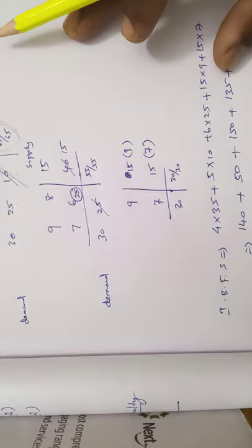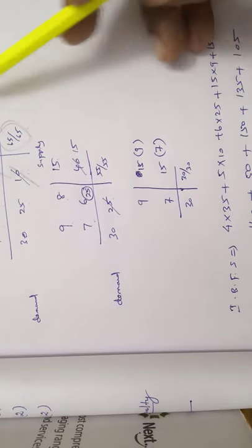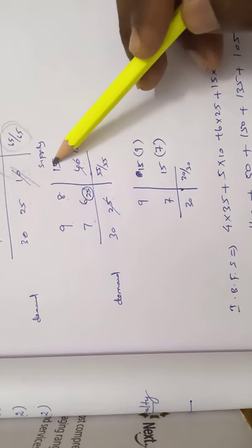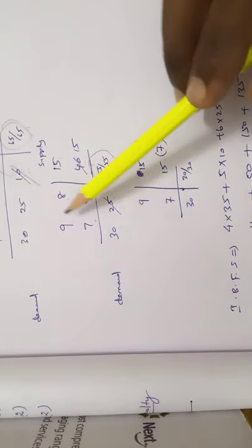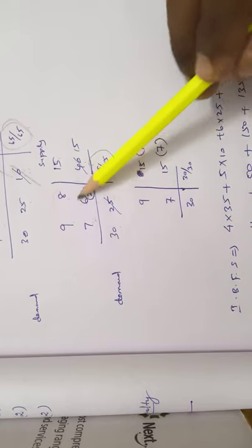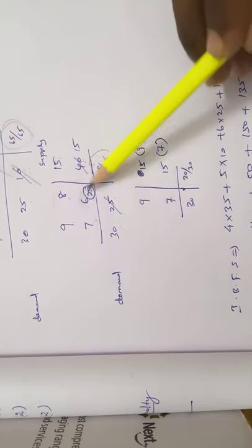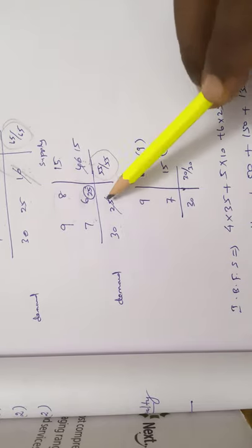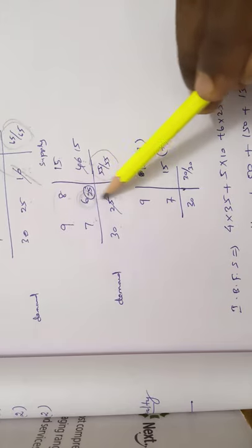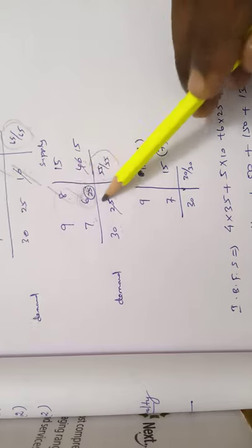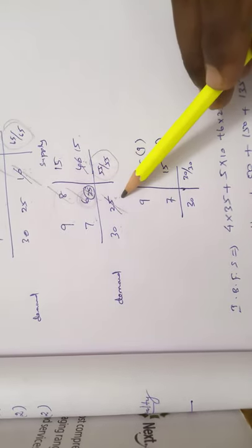Remaining cost values are 9, 8, 7, 6. Supply is 15, 40 and demand is 30, 25. Total is 55 each — balanced. The minimum cost is 6. Corresponding supply is 40 and demand is 25. Minimum is 25, so allocate 25 to cost 6. Cross out the column. Supply becomes 40 minus 25 equals 15.